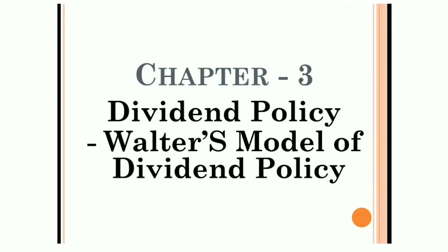A normal firm is one where R is equal to K. For a normal firm, there is no optimum dividend policy or optimum dividend payout ratio, because whether the dividend payout ratio is zero or one hundred, the market price of the share will remain constant. So there is no optimum dividend policy or dividend payout ratio for a normal firm.